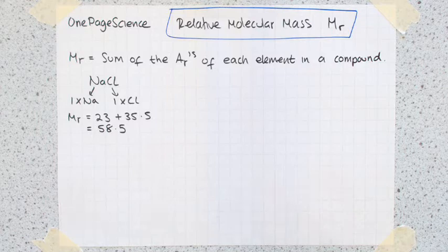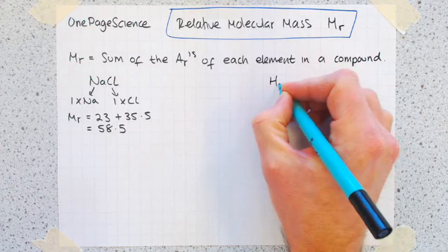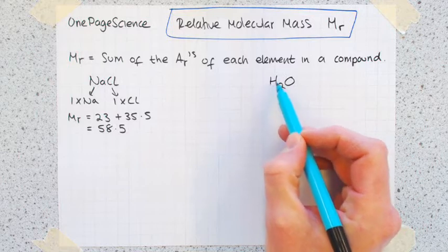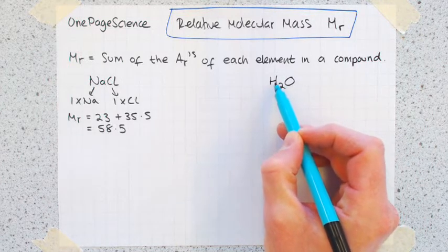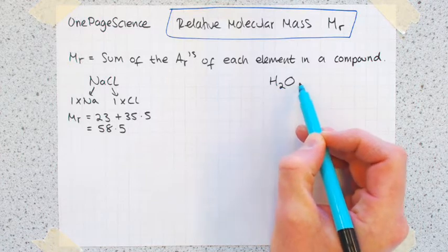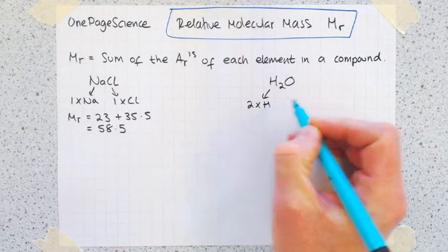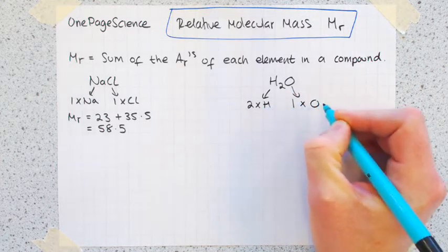Let's move on to one that's got more than one of each element. So still a relatively simple molecule, something like water, H2O. What that formula is telling you is that you've got two hydrogens. The two here comes after the element. That tells you how many of each element you've got. So we've got two times hydrogen and one times oxygen.